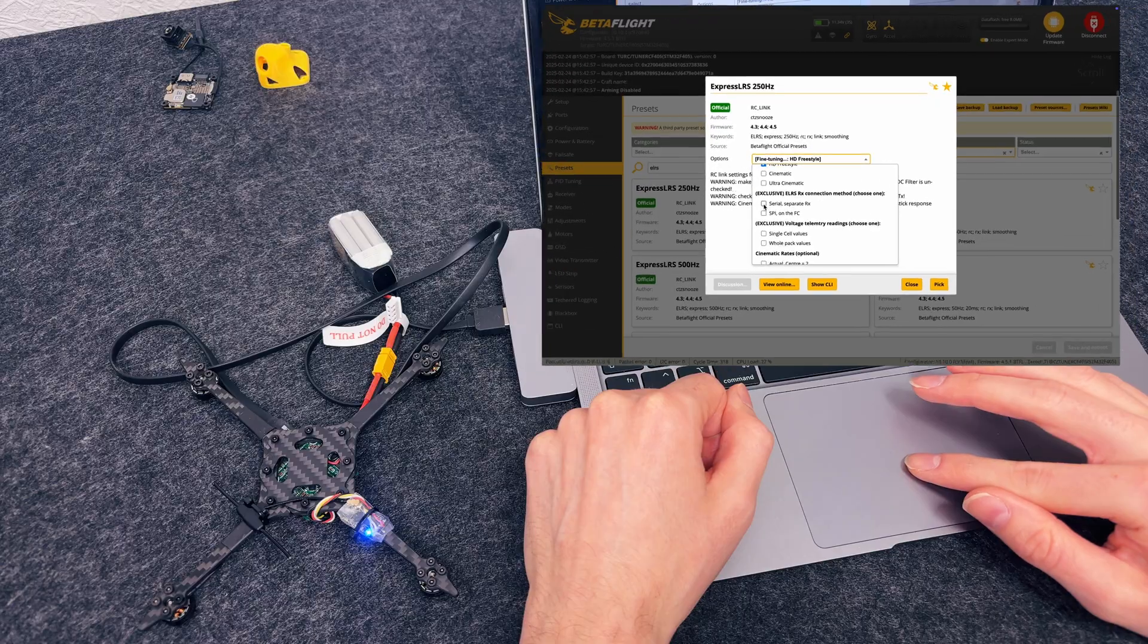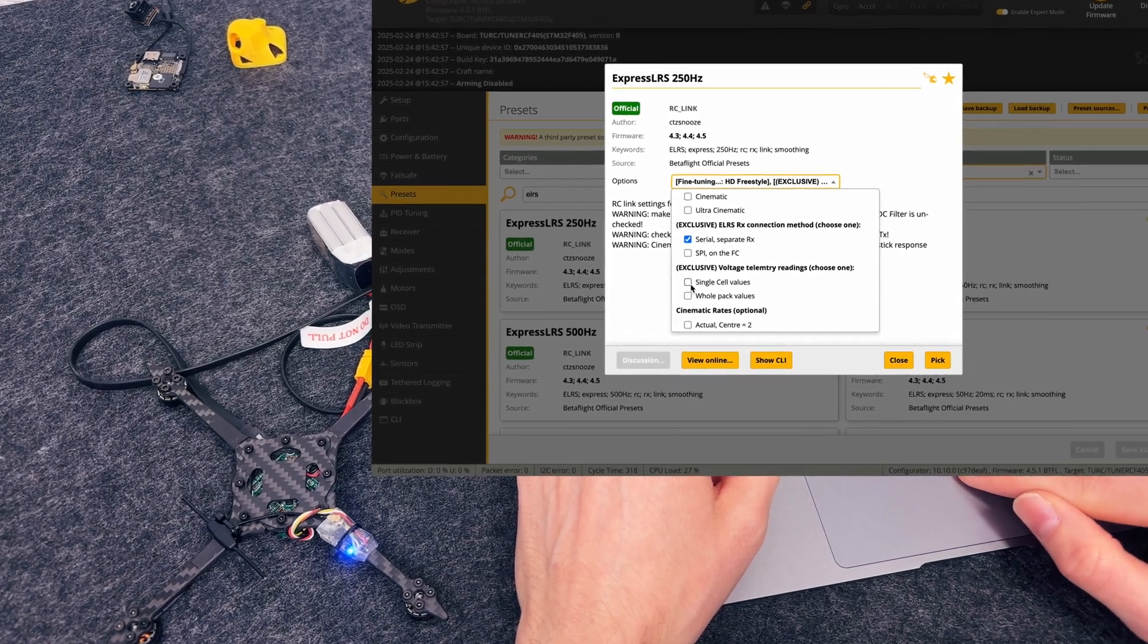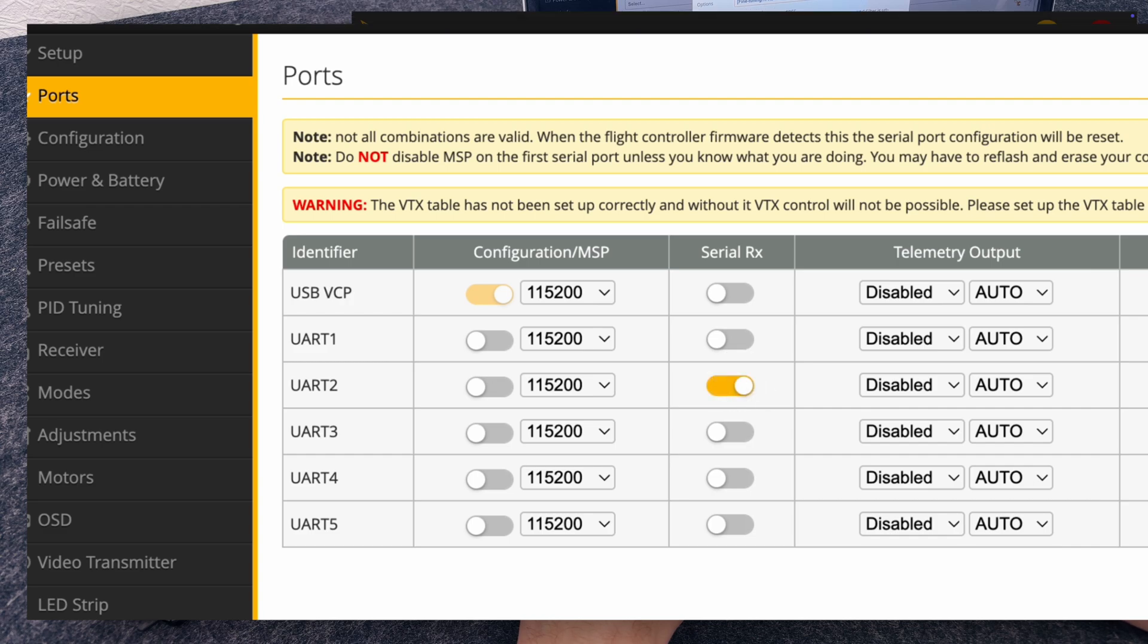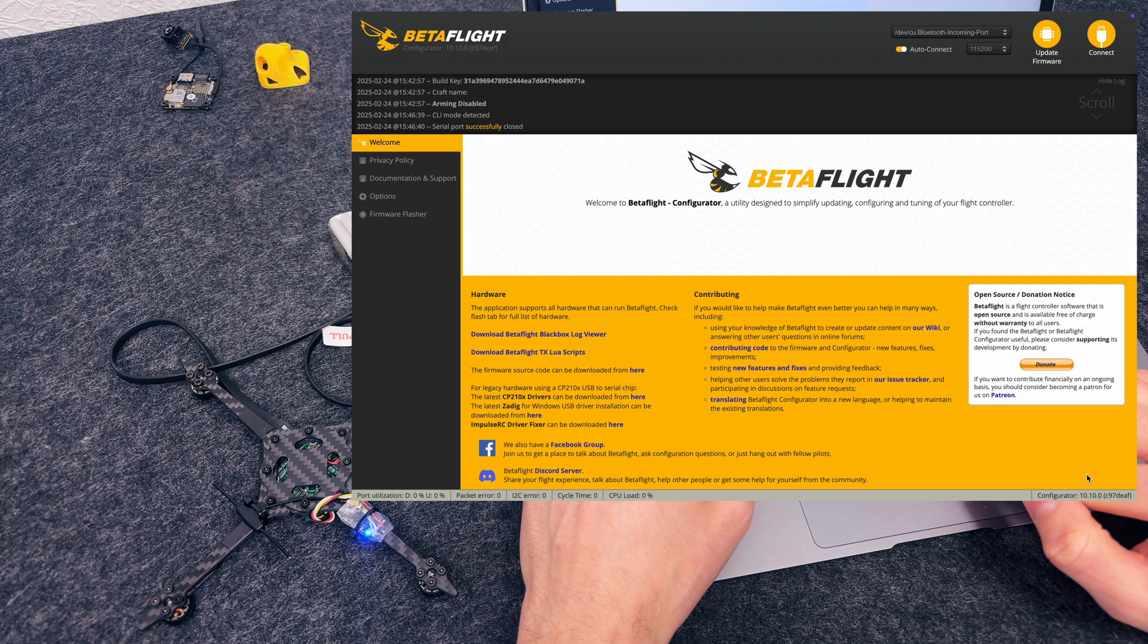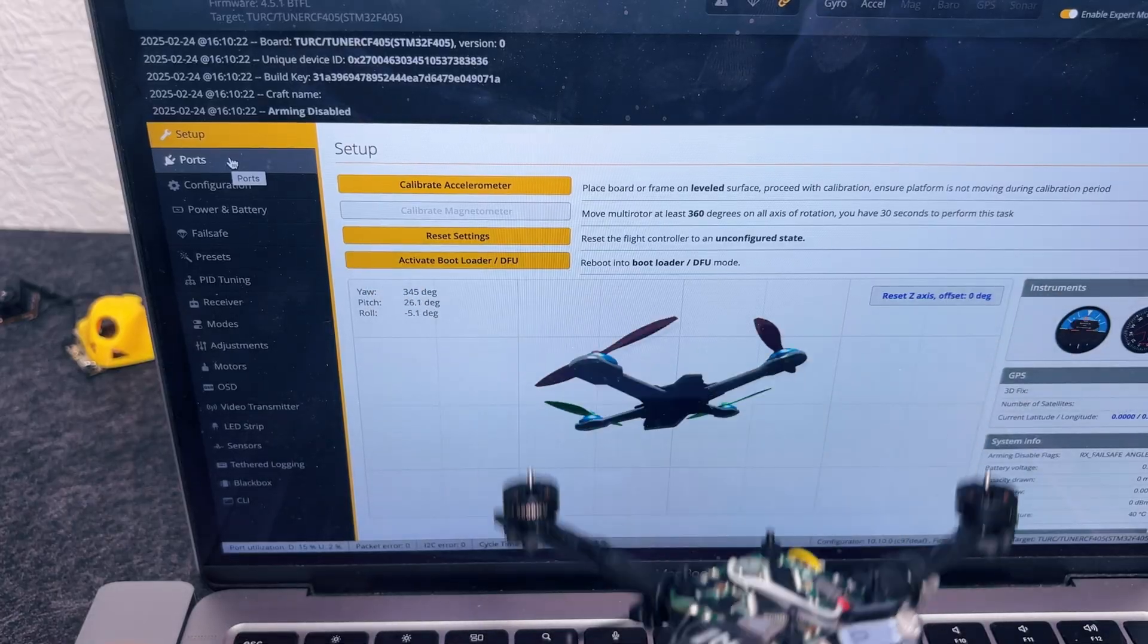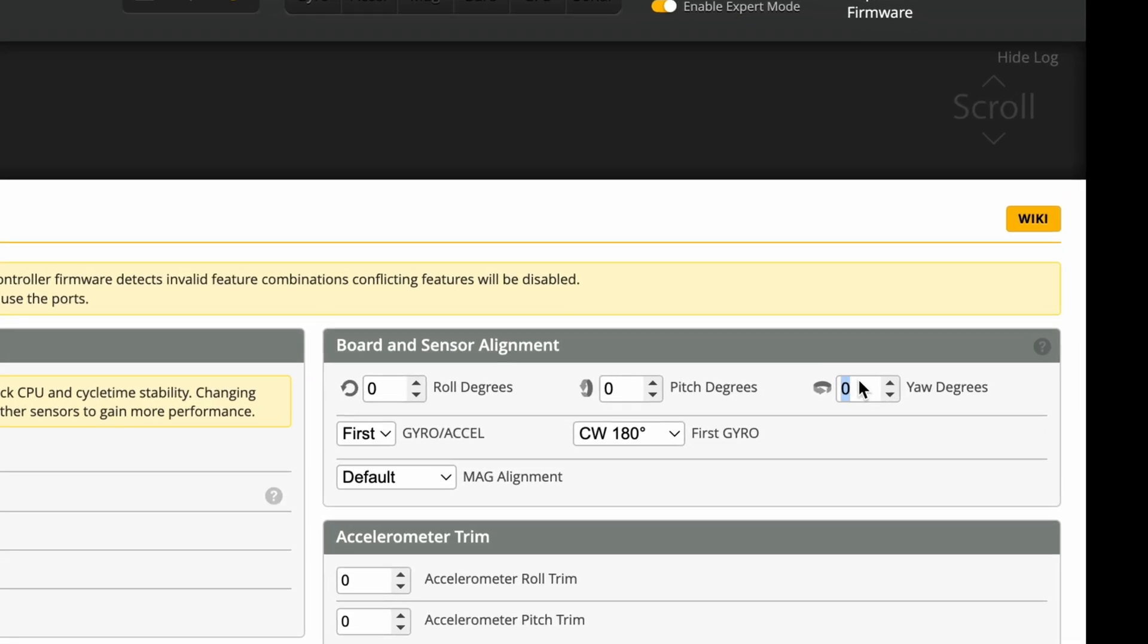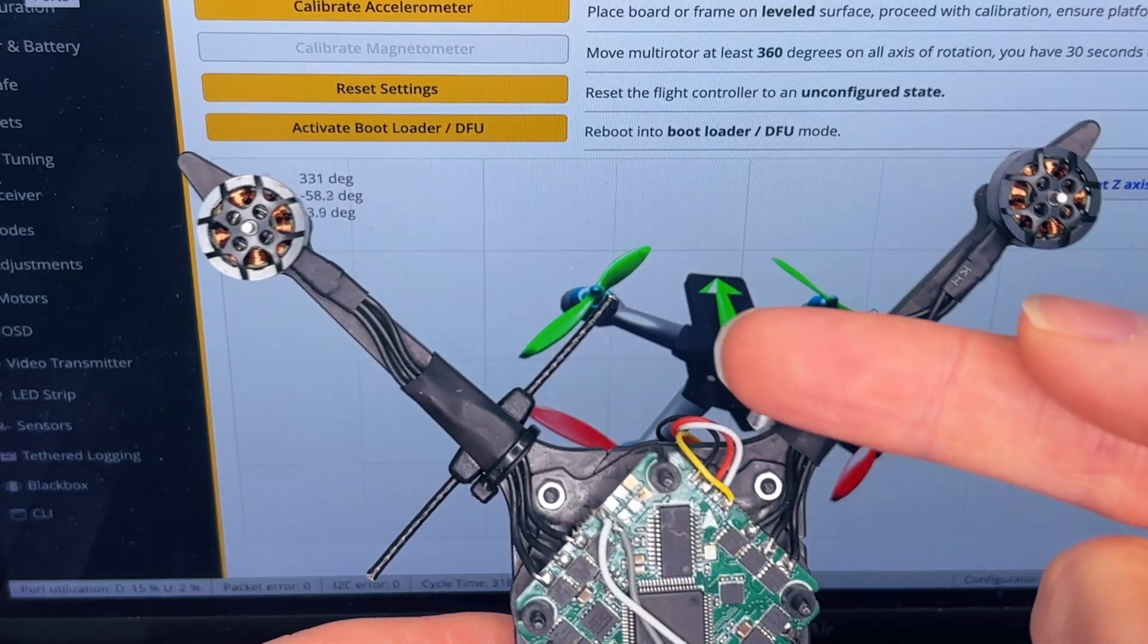Next, Betaflight setup. Go into the presets tab, find the ELRS preset that matches your radio, and select it. One click. That's it. Just don't forget to set the correct UART. Otherwise, you'll be wondering why nothing's working. Now let's make sure Betaflight knows which way the flight controller is facing. Flip the quad around. Does the on-screen model match your real-life movements? If yes, perfect. If no, you might need to tweak the offset. Especially if your FC is mounted differently than the gyro arrow printed on the board.